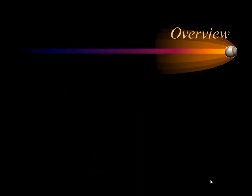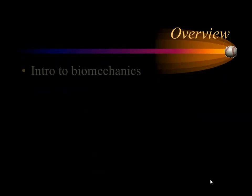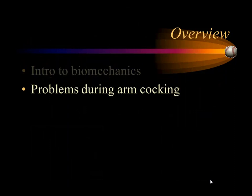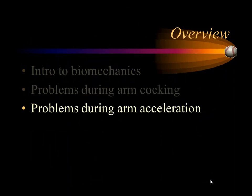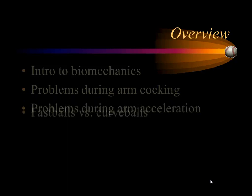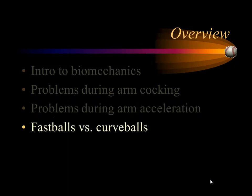So here's an overview. We're going to talk a little bit about the biomechanics, some of the problems during the arm cocking phase, and some of the problems during the arm acceleration phase. A little bit about fastballs versus curveballs and how they affect the elbow, and I'll just summarize.